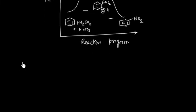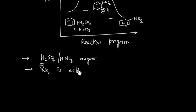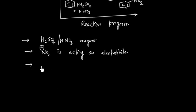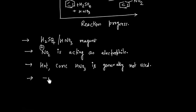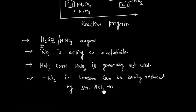We have important points in this reaction. In case of nitration, H2SO4/HNO3 is used as a reagent. Second important point, NO2 plus in this reaction is acting as electrophile. Hot concentrated HNO3 is generally not used. And the last point, the nitro group in benzene can be easily reduced by Sn/HCl to give aromatic amines or aniline.